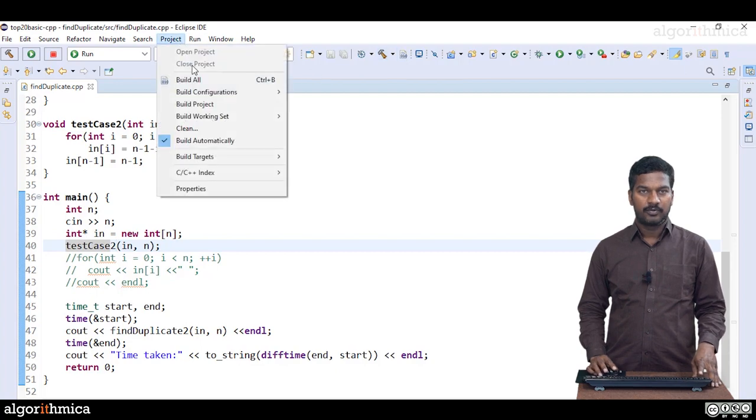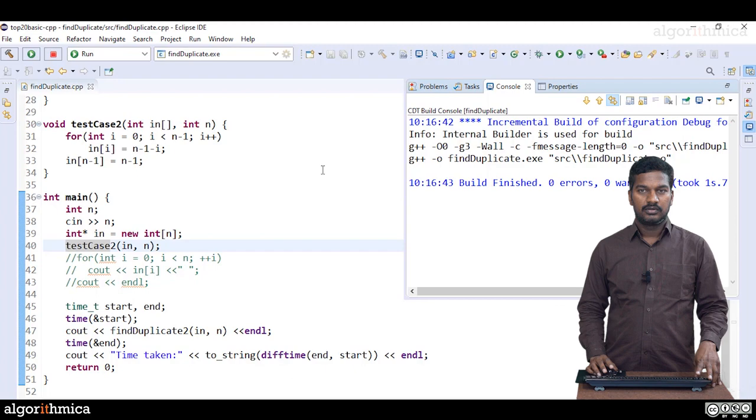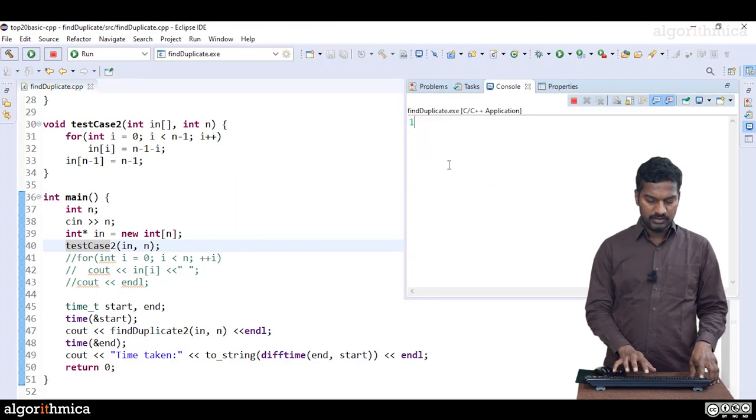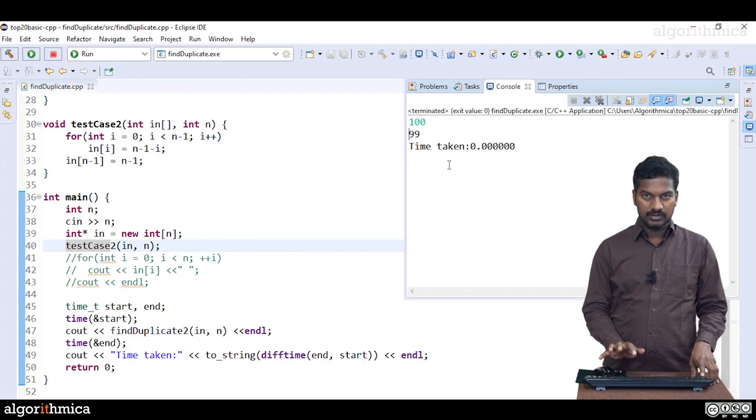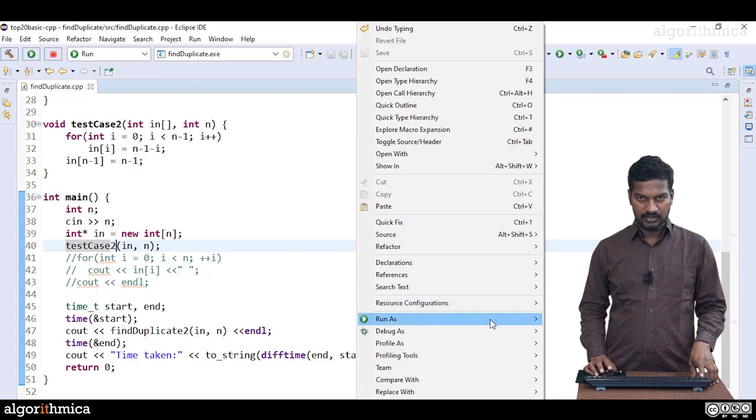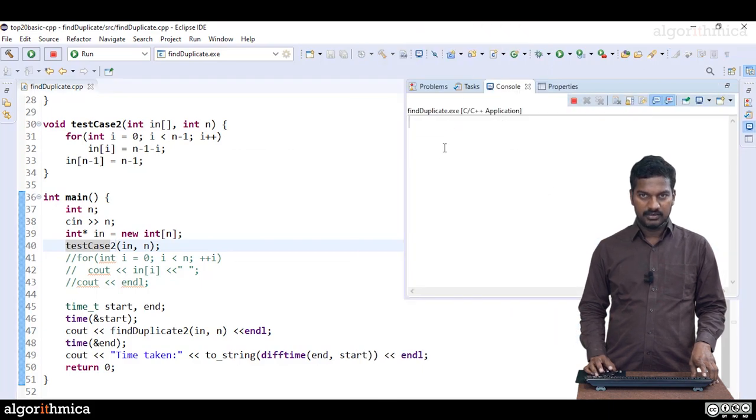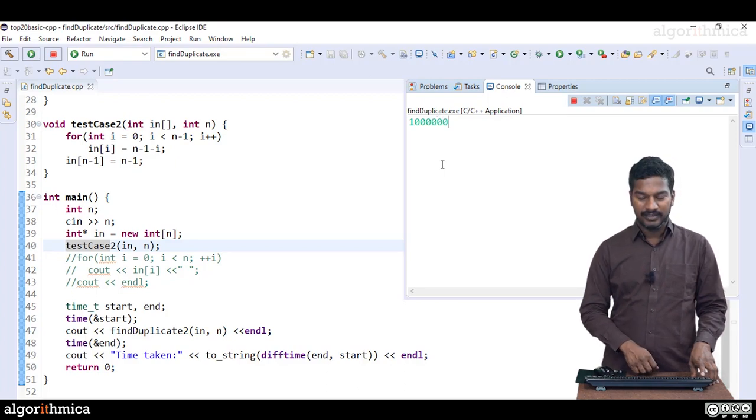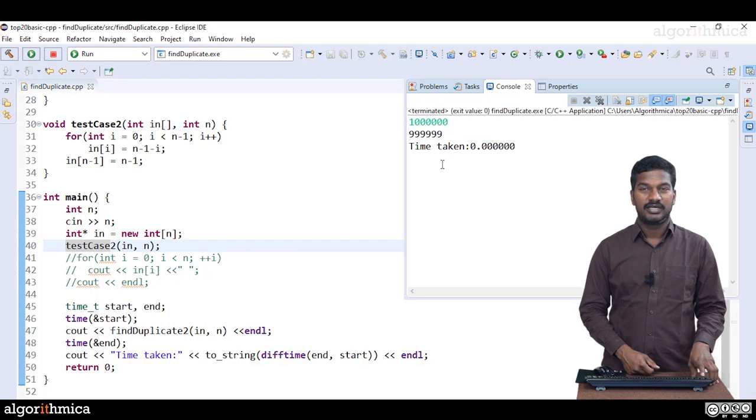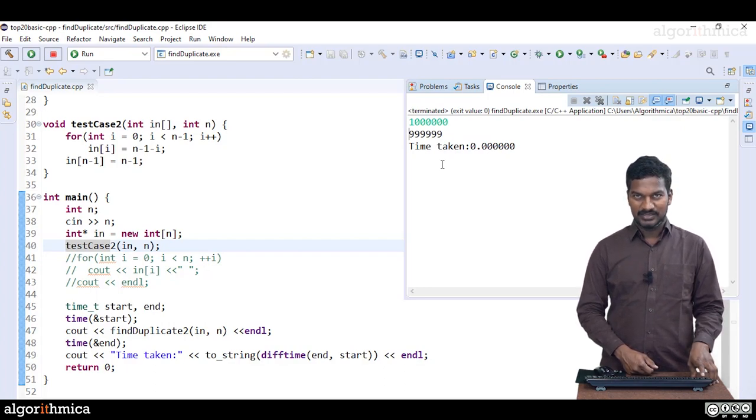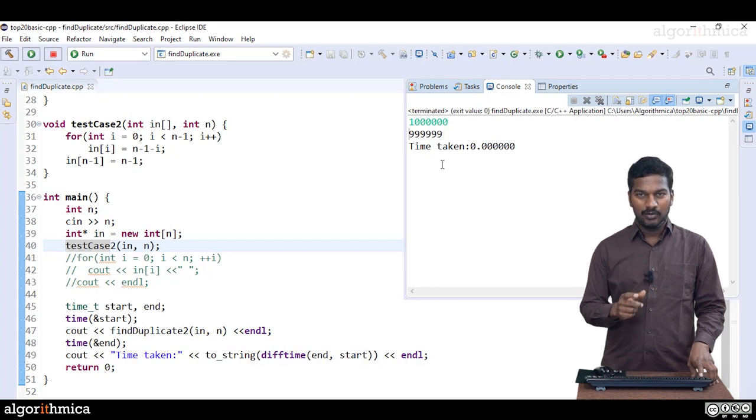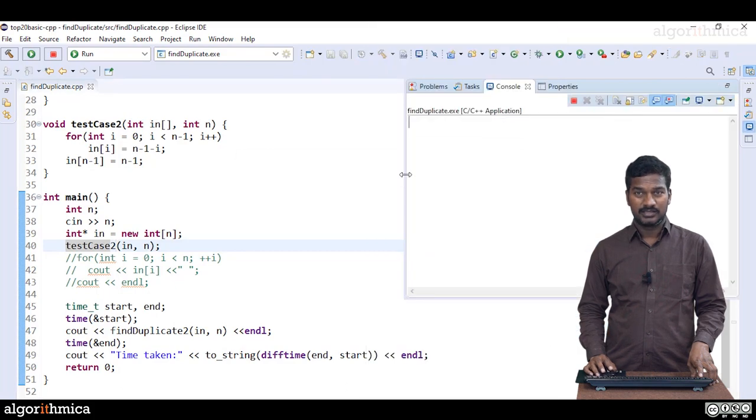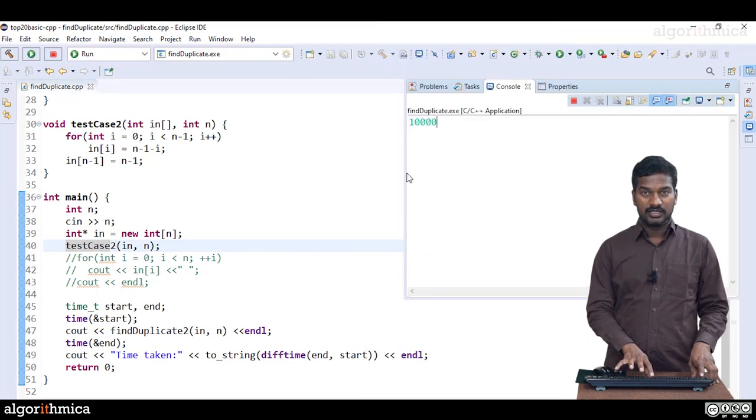Test case 2. Now first build the project here. Now let's run as local C++ application. First we see 100 again, fine, so working. Now go to big size: 100 thousand, 10 thousand, 1 lakh, now 10 lakhs, a million. How much time does this take? So that means the algorithm is really doing very fast. 10 lakhs, let me increase more.